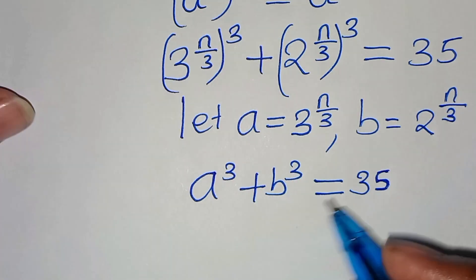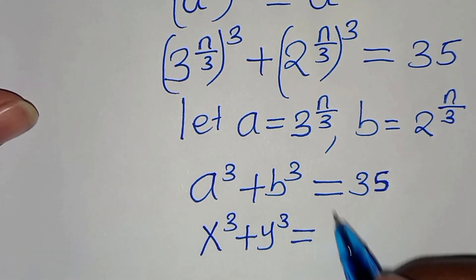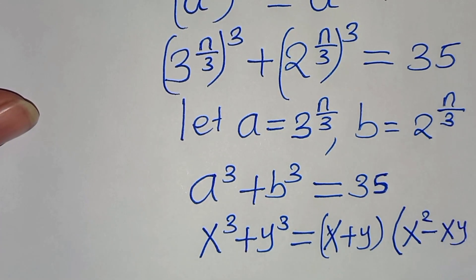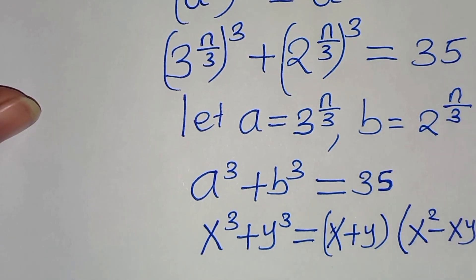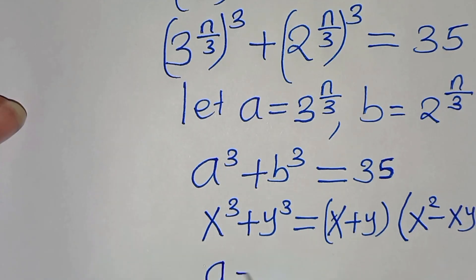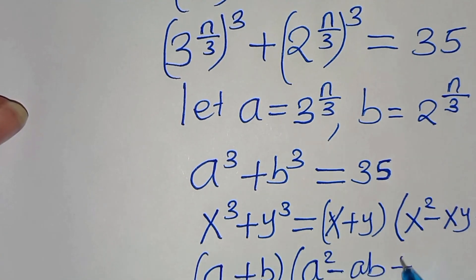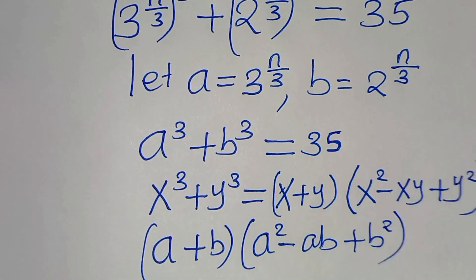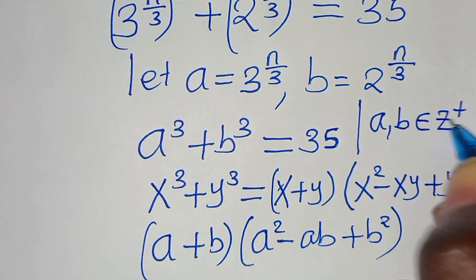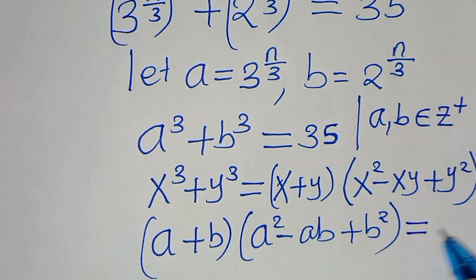Now, a to the power of 3 plus b to the power of 3 is in the form of x cubed plus y cubed, which we can express using the sum of two cubes formula as x plus y, times x squared minus xy plus y squared. So we express a cubed plus b cubed as a plus b, times a squared minus ab plus b squared, equal to 35. Note that a and b are members of positive integers.